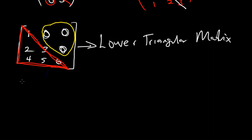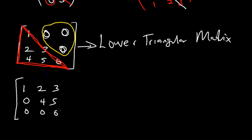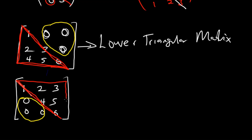If all the elements below the principal diagonal are equal to zero, we have an upper triangular matrix. For example, with 1, 2, 3 / 0, 4, 5 / 0, 0, 6, the elements below the principal diagonal equal zero, and we can see the triangle at the upper end of the matrix. This is referred to as the upper triangular matrix.